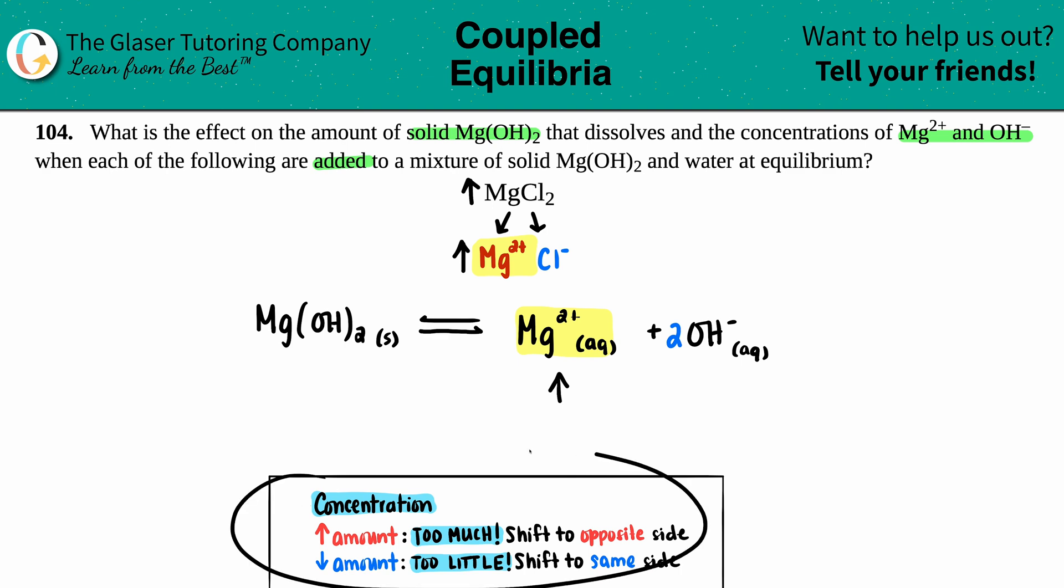Well, this comes from Le Chatelier's principle, which we learned, I don't know, five chapters ago. We'd love to bring this back. But anyway, this is a concentration Le Chatelier's. Now, in this case, we added an amount. We have way too much Mg2+.